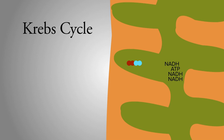When two electrons are stored in a molecule called FAD during the Krebs cycle, it becomes FADH2. This chain of reactions produces one FADH2 molecule.